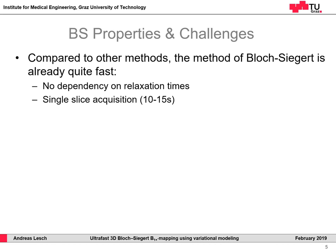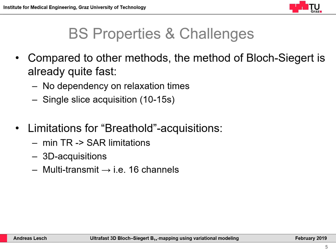The Bloch-Siegert phase is proportional to the squared B1 peak magnitude and a constant only depending on the pulse parameters. Compared to other methods, this method is already quite fast because there are no dependencies on relaxation time, and a single slice acquisition can be done in about 10 to 15 seconds.